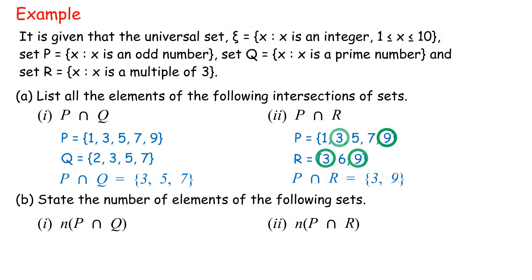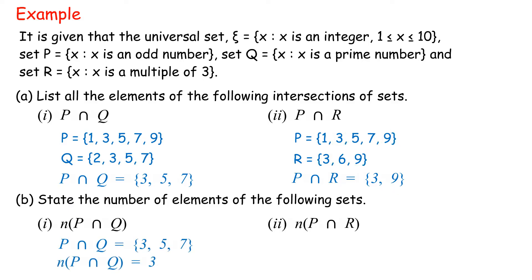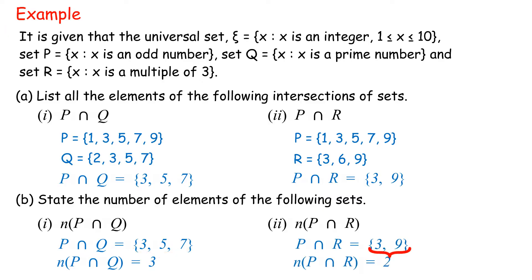Part B. 1. n(P intersect Q) = 3. 2. n(P intersect R) = 2.